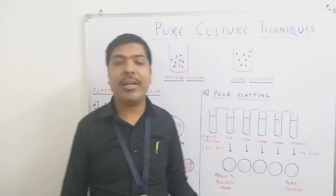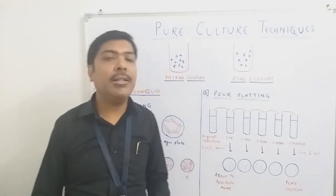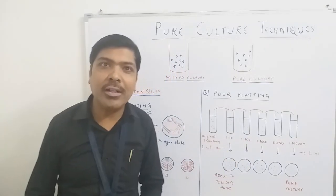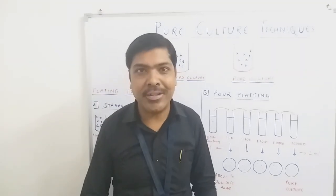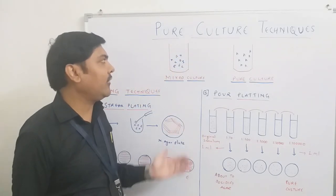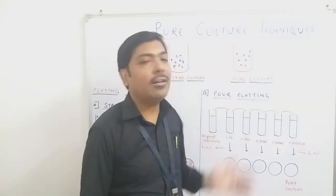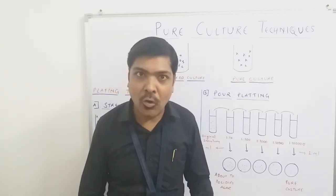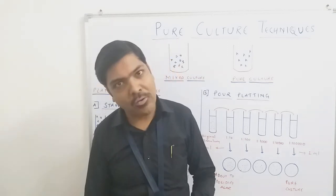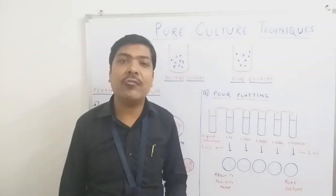Since we are performing experiments on a particular category of bacteria, we have to go for the isolation of pure culture from the mixed culture. Pure culture is the culture that represents only a single kind of bacteria. As seen in the diagram, mixed culture has A, B, C, D, E, F different categories, whereas pure culture has only a single kind of bacteria. The colony or culture representing only a single kind of bacteria is called a pure culture, while mixed culture indicates the presence of different types of bacteria.